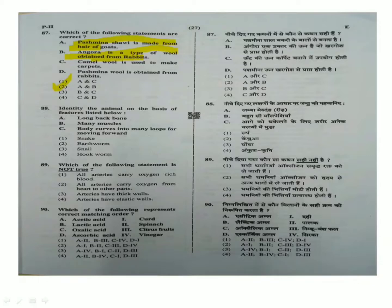Next question: Identify the animal on the basis of the features listed below. Long backbone, many muscles, body curves into many loops for moving forward. Among vertebrates, only a snake matches these features. So the answer is option 1, snake.